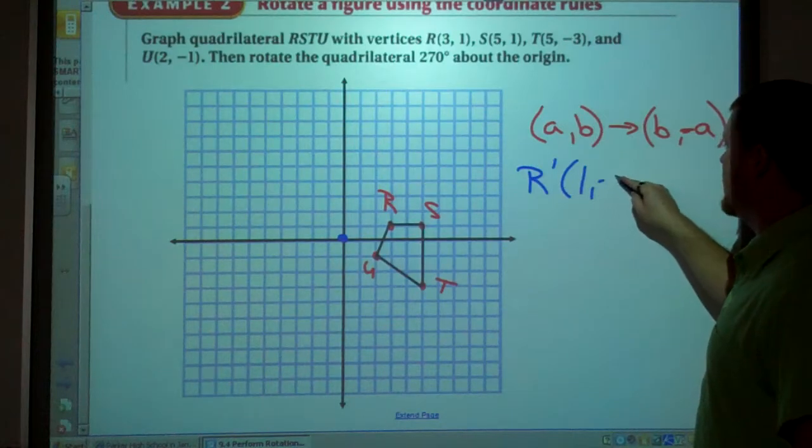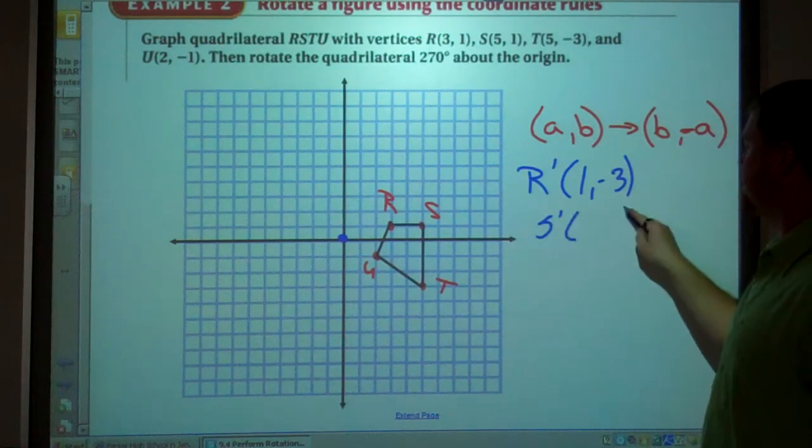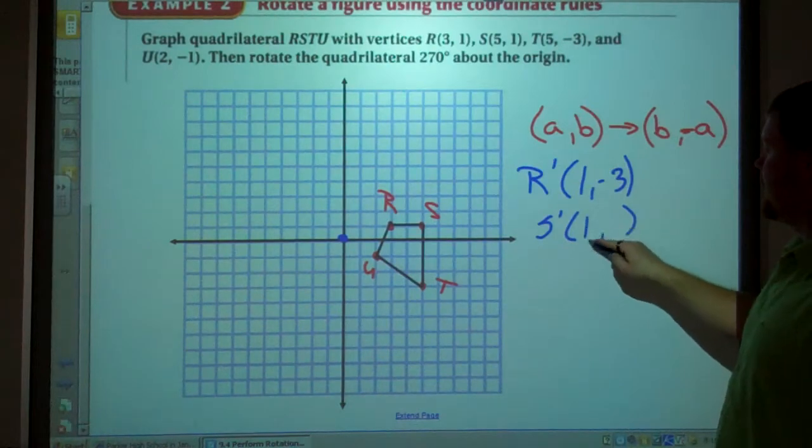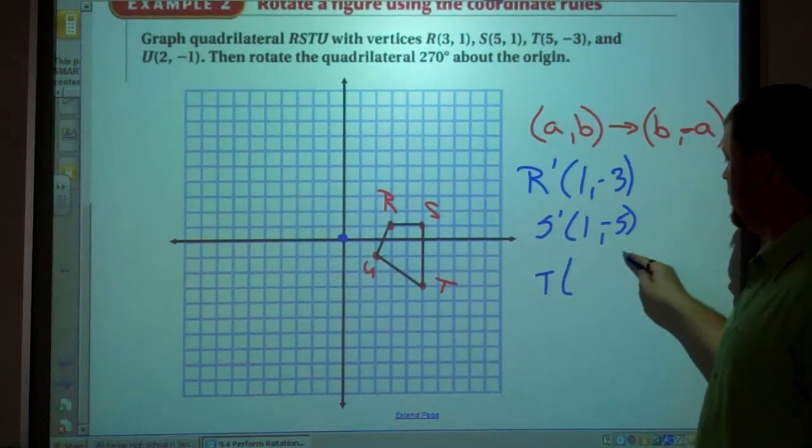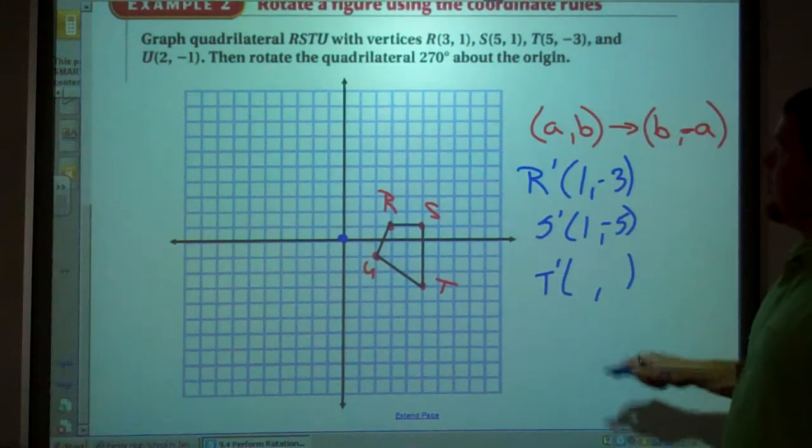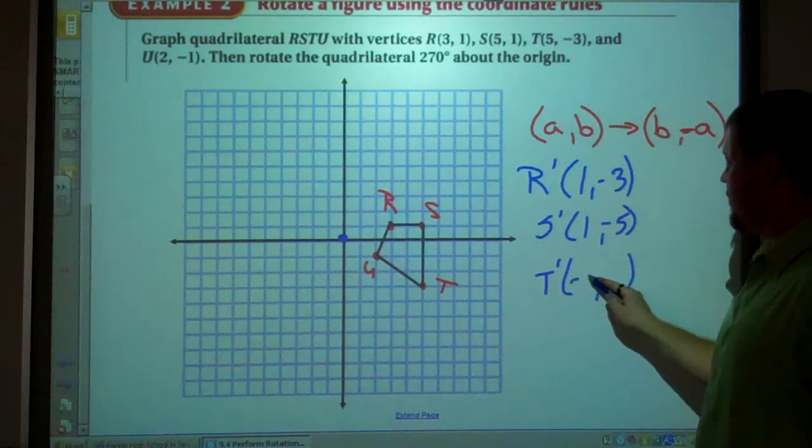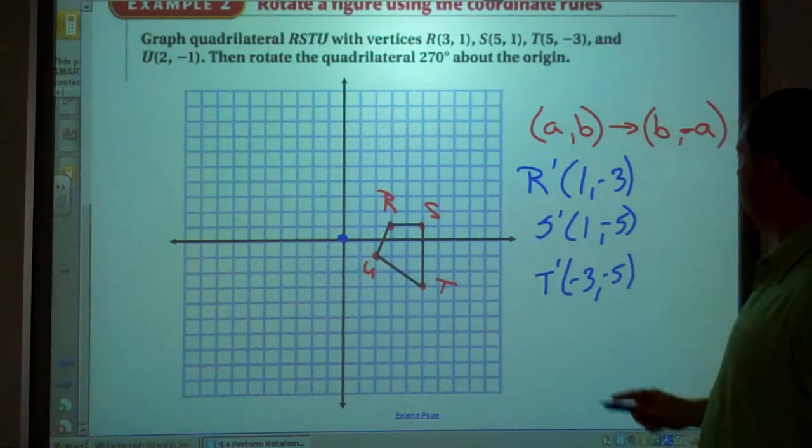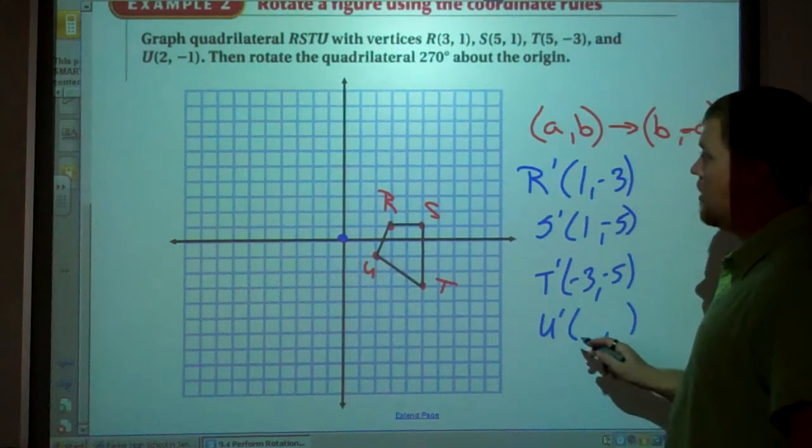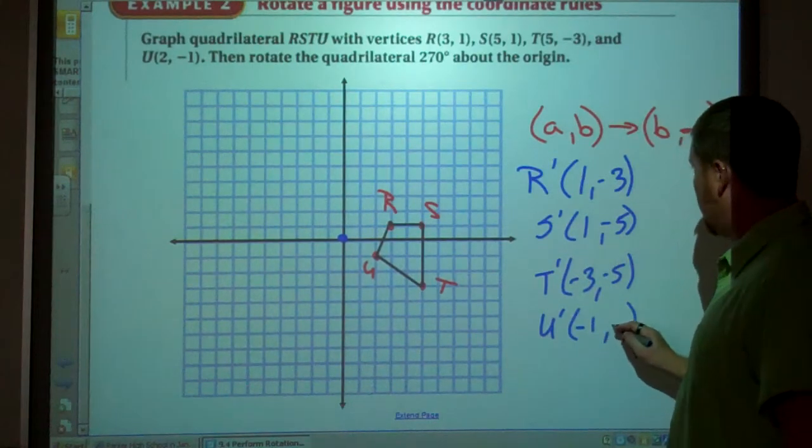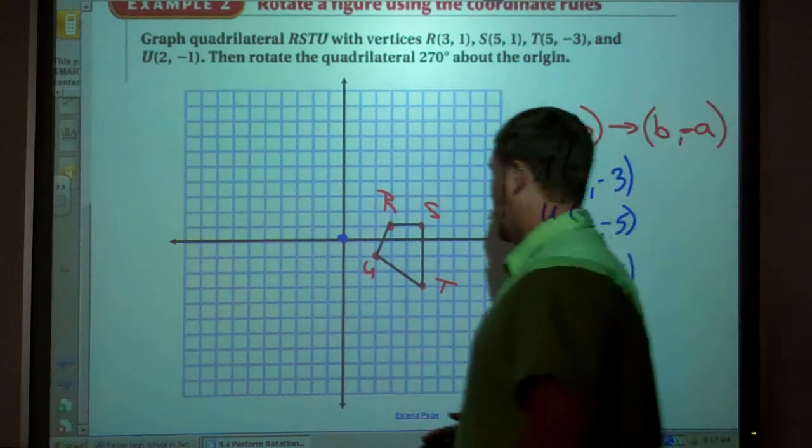S' would be (1, -5). T' would be (-3, -5). And U' would be (-1, -2). Now graph those points.